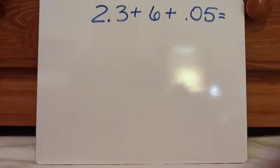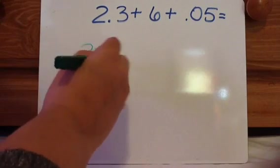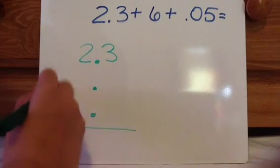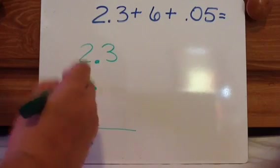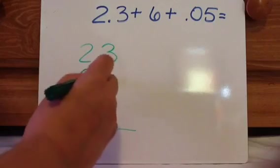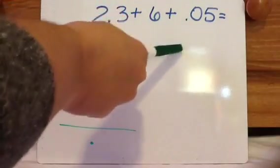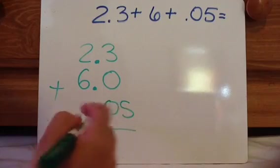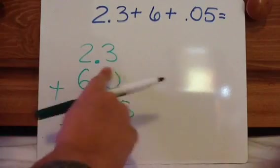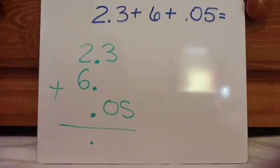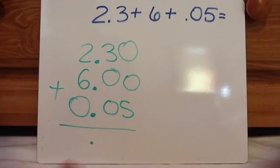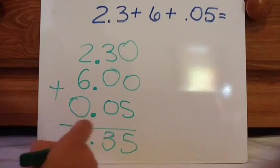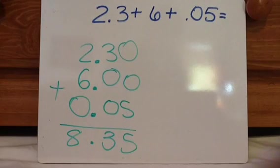Let's look at something a little bit more complex. 2.3 plus 6 plus 0.05. So in this situation, you have 2.3. You want to go ahead and put decimals where they belong. This one here is 6. That's like saying 6 whole or $6. So that actually goes over here. So I have 6 whole and 0 tenths. Then I have 5 hundredths. So 0.05. This kind of sets everything off. So you have to fill in zeros to balance it all out so you can properly add everything. So this equals 5, 3, and 8. 8 and 35 hundredths is my answer.